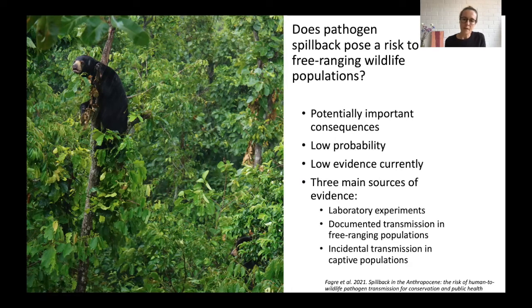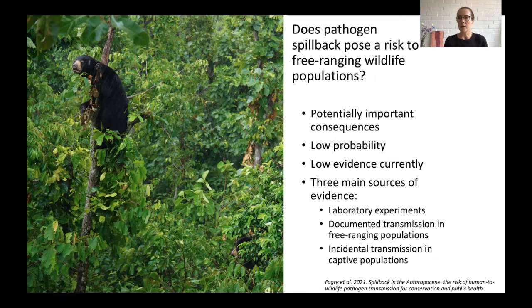Thinking about where evidence could come from: laboratory experiments are difficult to justify ethically in most wildlife species. Documented transmission in free-ranging populations is also very difficult — in sun bears, for instance, we have very little existing knowledge even of naturally occurring diseases. So we're often left with incidental transmission in captive populations. While this can be quite niche in terms of environment and opportunity, it still demonstrates a susceptibility that could be significant and should be considered in risk analysis.